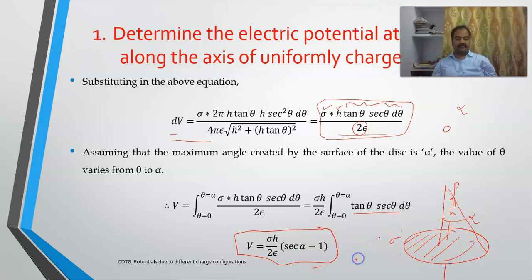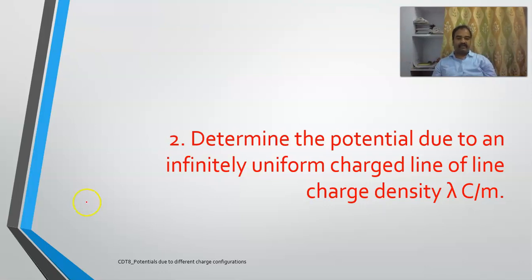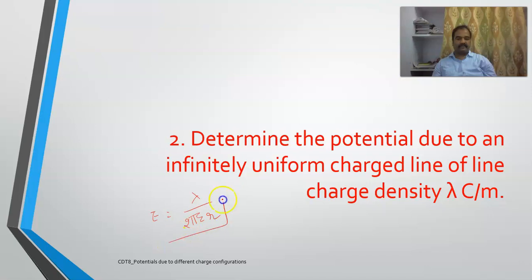Moving on to the second question: determine the potential due to an infinitely long uniformly charged line. For an infinitely long uniform line charge, we already know the electric field is E equals lambda over 2π epsilon r. Now we will compute the potential for this uniformly charged line.